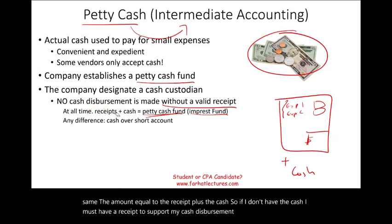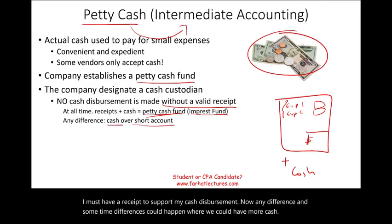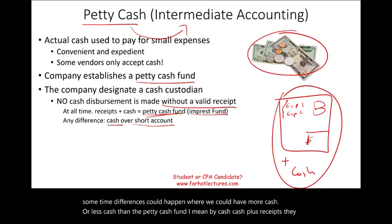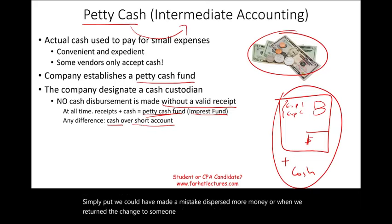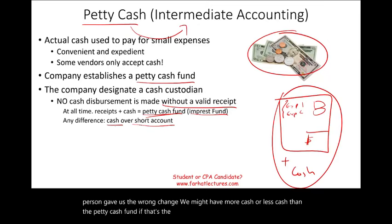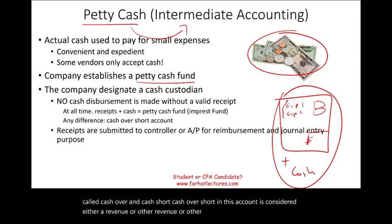Sometimes differences can occur where we have more or less cash than the petty cash fund amount — meaning cash plus receipts could be more or less than expected. This could happen if we make a mistake, disburse more money, or return the wrong change. If that's the case, we record the difference in an account called cash over and short. This account is considered either other revenue or other expense, and it should be a very small amount.